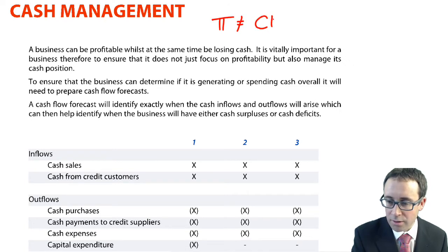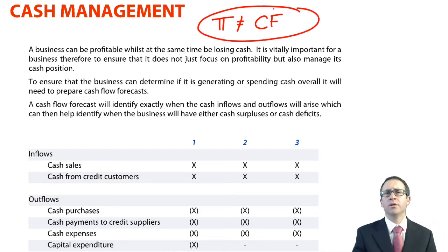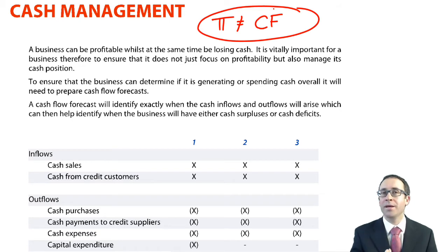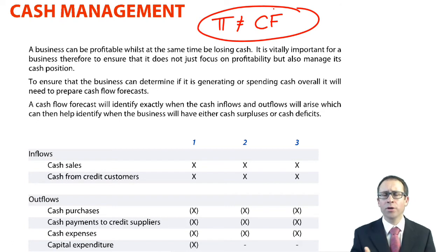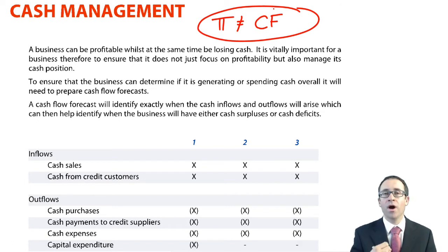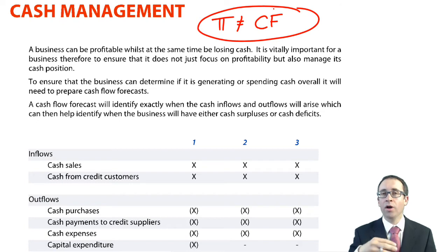Profits does not equal cash flow. You can be profitable, but you may not be generating cash. You could be loss making, but you could actually be generating cash. So it's important from a cash perspective that we know where the cash is coming from, where the cash is going to — not just from an annual perspective, but on a month by month perspective.